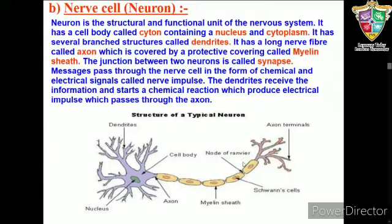The signal that passes along the nerve fiber is called a nerve impulse. The nervous tissue picks up sensations of all types, like sight, sound, smell, taste, pain, and other stimuli.